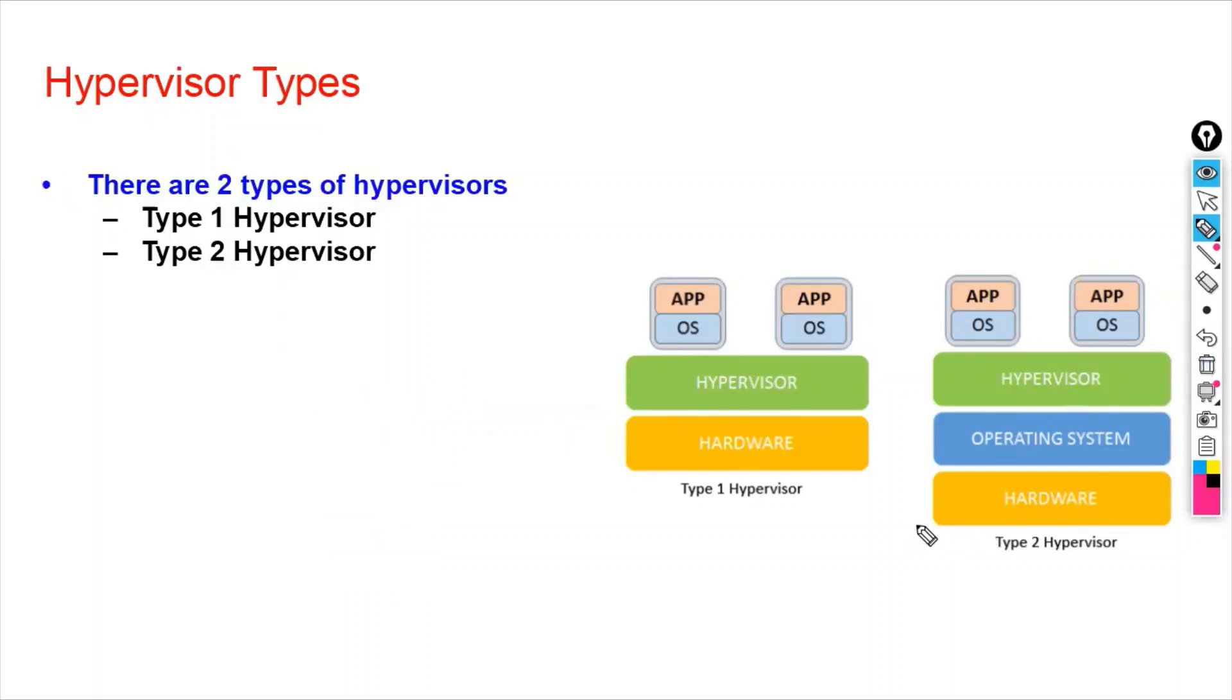Type 2 hypervisor. You will take the server. On top of this server, you will install the operating system, any operating system like Windows Server 2022 or Windows 10 operating system. On top of this Windows operating system, you will install the hypervisor. Then you will create the virtual machine.